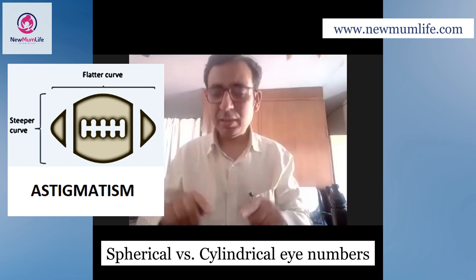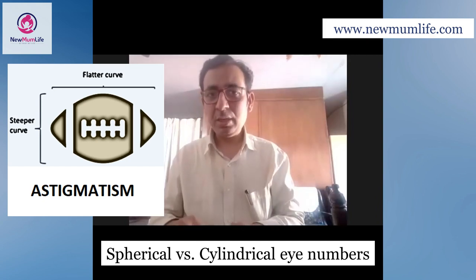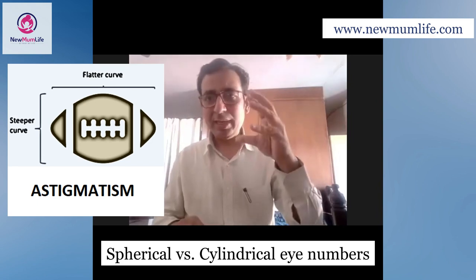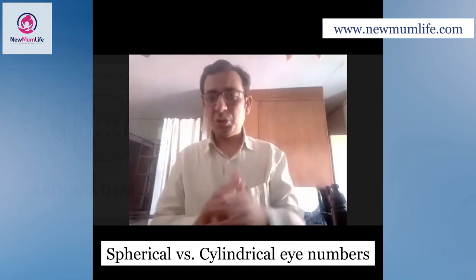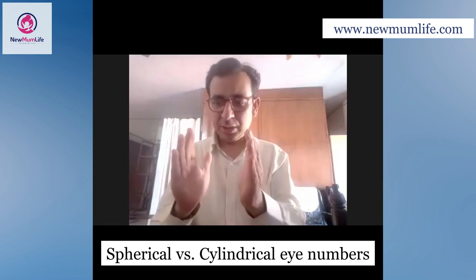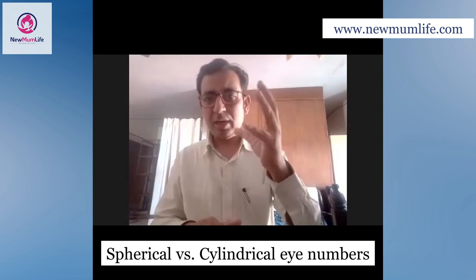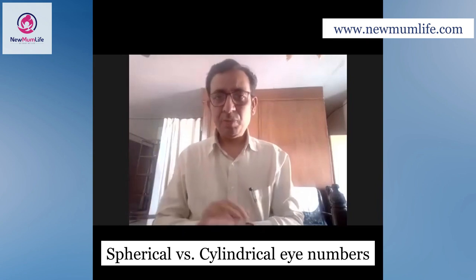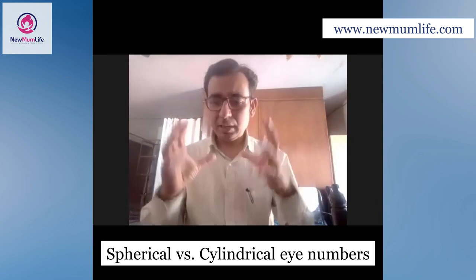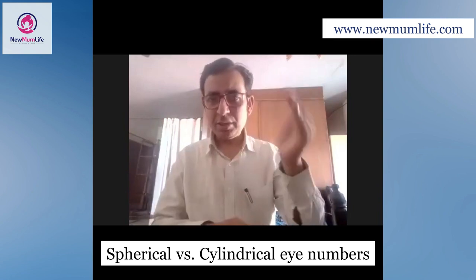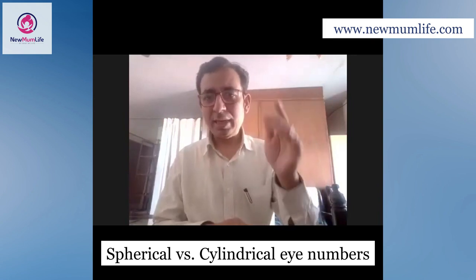The good thing is that cylindrical numbers usually do not increase with growth. During childhood, the length of the eyeball increases — which affects spherical numbers — but the shape of the cornea remains stable over many years, except in very few conditions. So the next question comes automatically: can length-based numbers and cornea shape-based numbers both exist together?